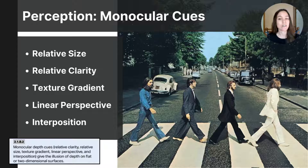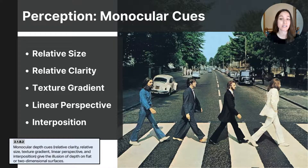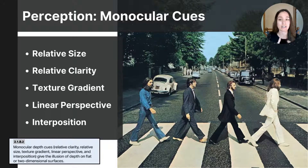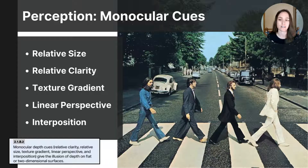Texture gradient is a cue that shows a gradual change in surface texture as you recede into the distance. At the bottom of the photograph, notice the pavement — it appears coarse and detailed, with visible particles and dark and light textures. As you look farther down the road, the texture becomes smoother and less distinct. This helps us perceive depth, and this is called texture gradient.